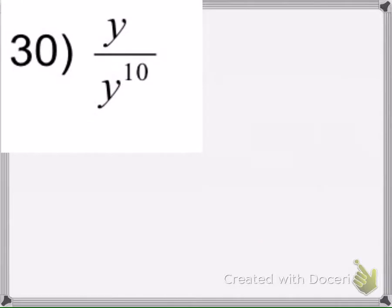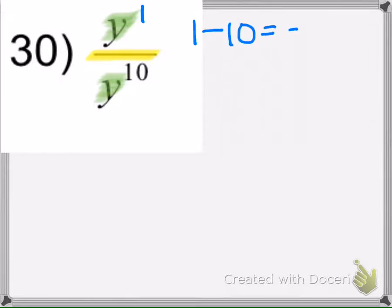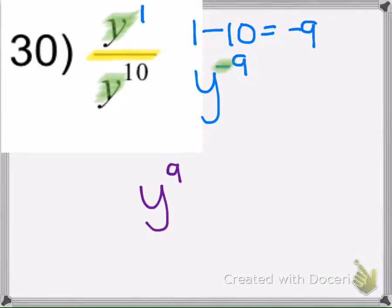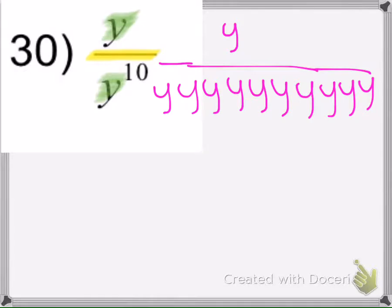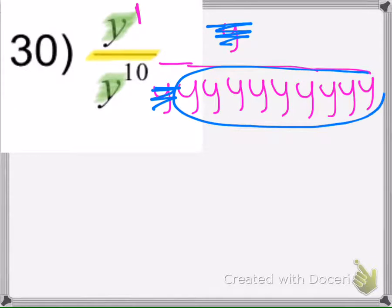Here when I look at this problem I see this division bar, so that means if the bases are the same — which they are, they're both y's — the rule when you're dividing is to subtract the exponents. So 1 minus 10 is negative 9, and when you get a negative exponent it moves to the denominator. If we draw it out, we'd see the one in the numerator cancels with one here, and you'd be left with nine in the denominator.